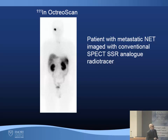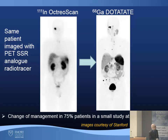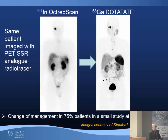This is indium-111 octreoscan, which we have available at this institution. This is the same patient imaged with a PET version of the somatostatin receptor analog called gallium-68 dotatate. We could see not only is one of the tumors seen to better advantage, but there are many more foci. In a small study at Stanford, management was changed in about 75% of patients.